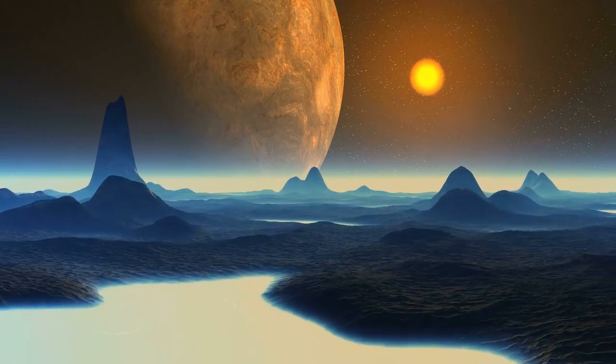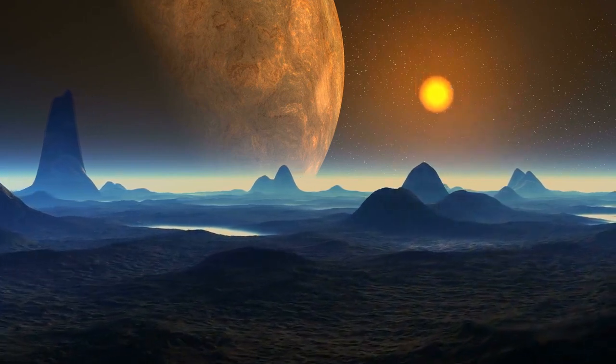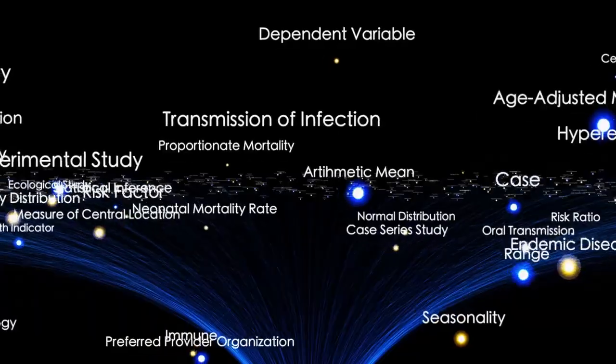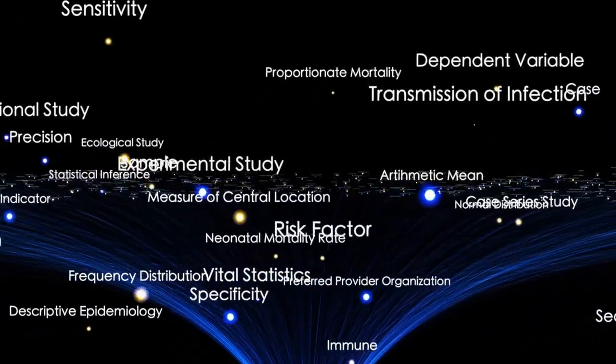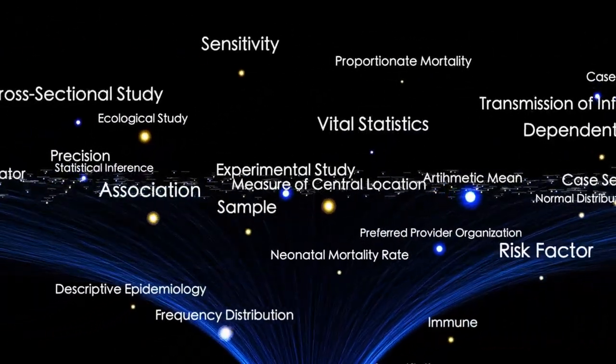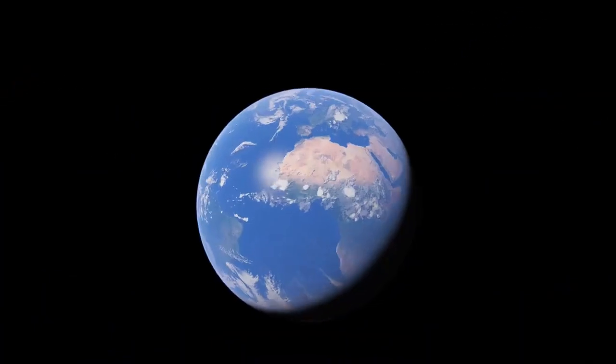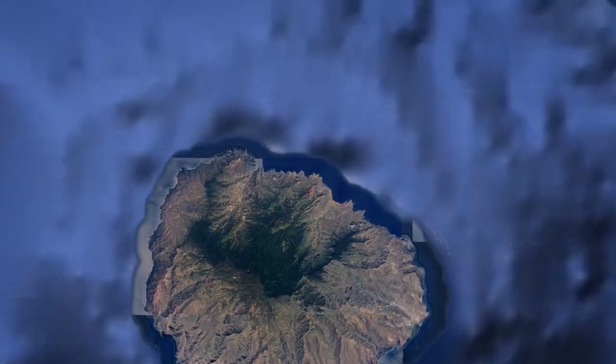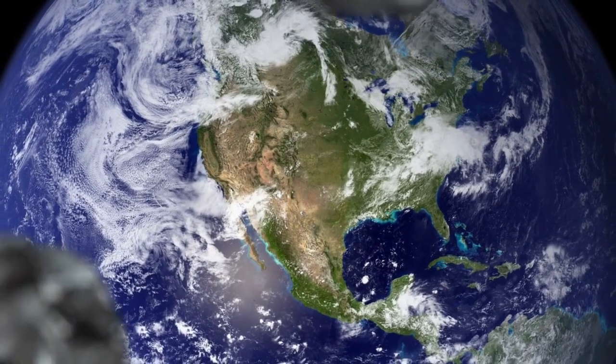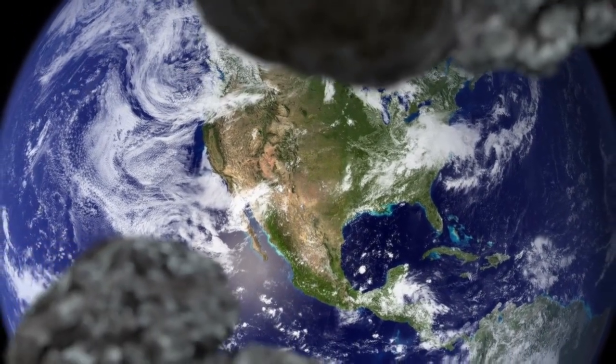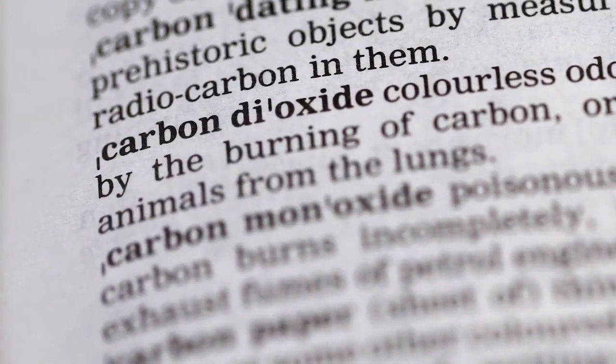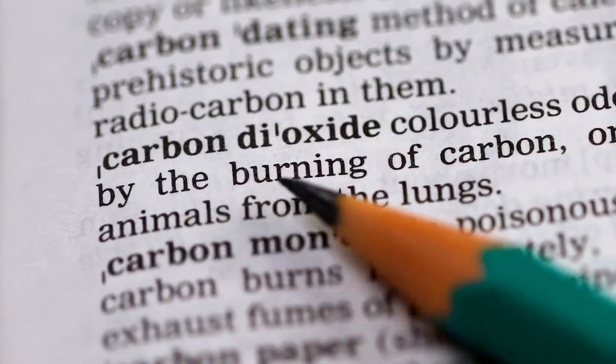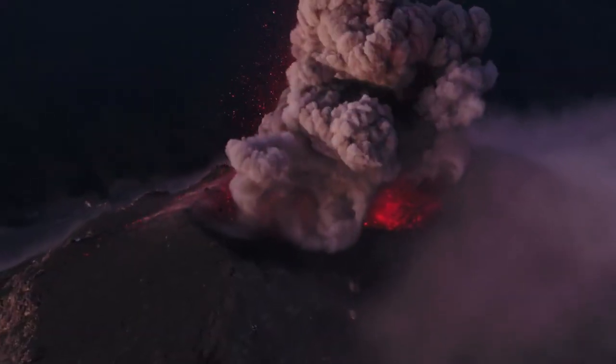The mission to uncover the secrets of Proxima B, despite its challenges, remains a driving force in the realm of space exploration. Among the tools fueling this invaluable research, the James Webb Space Telescope stands out. Launched toward the end of 2021 after numerous delays, this cutting-edge telescope holds the promise of shedding light on one of the most tantalizing questions in cosmology: does life exist on Proxima B? The path to uncovering the truth about Proxima B is far from straightforward.